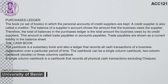The purchases ledger is the book, or set of books, in which the personal accounts of credit suppliers are kept. A credit supplier is also called a creditor. The balance of a supplier's account shows the amount that the business owes the supplier. The total balance in the purchases ledger is the total amount the business owes to its credit suppliers. This amount is called trade payables or accounts payables, shown as a current liability in the balance sheet.